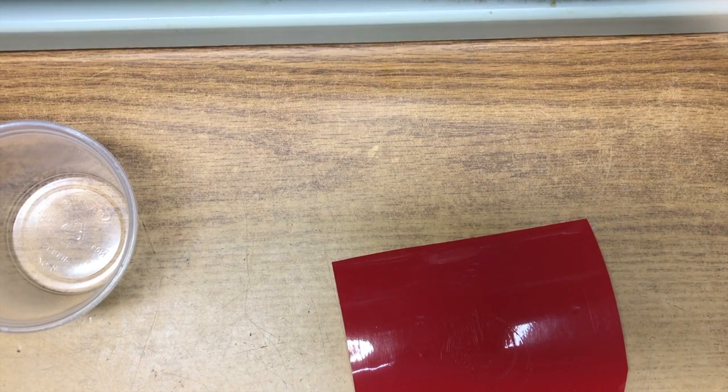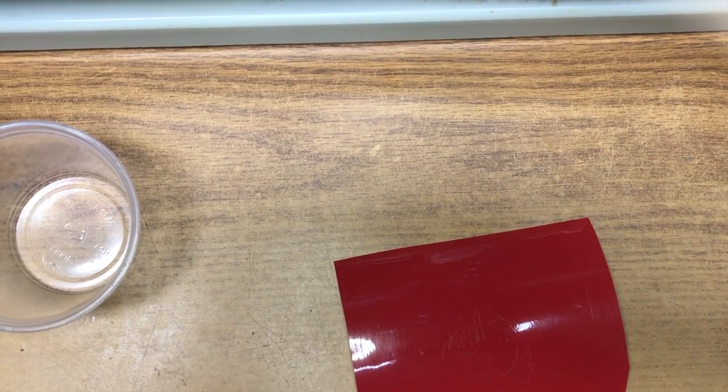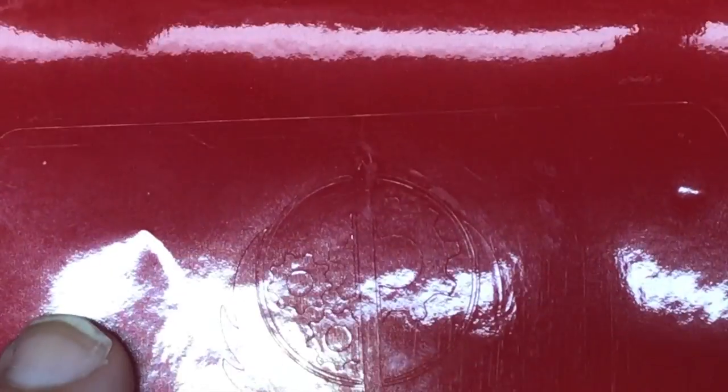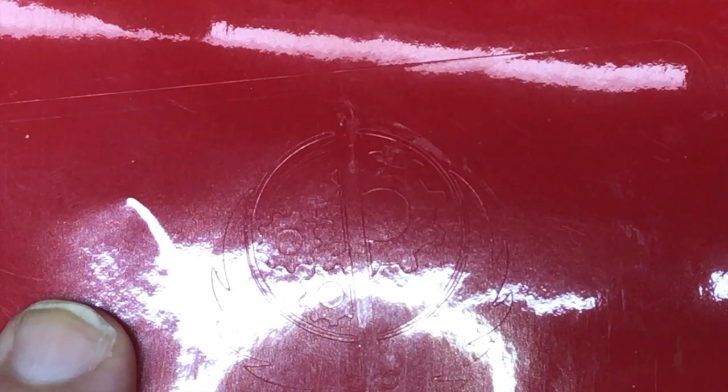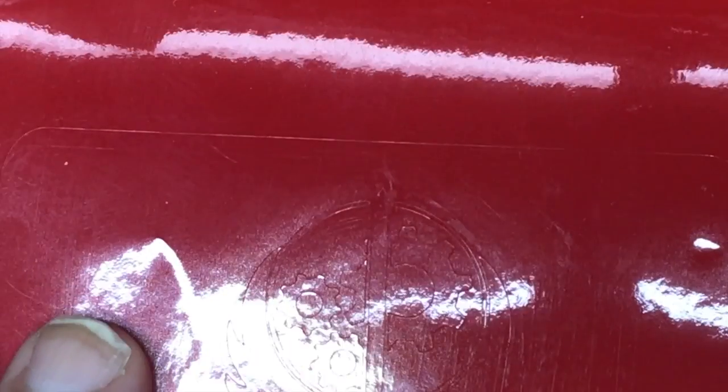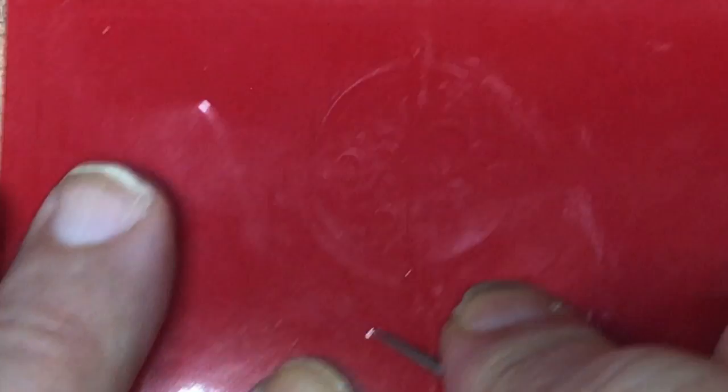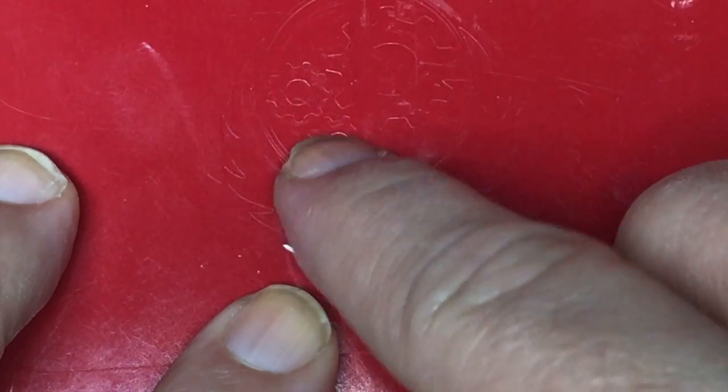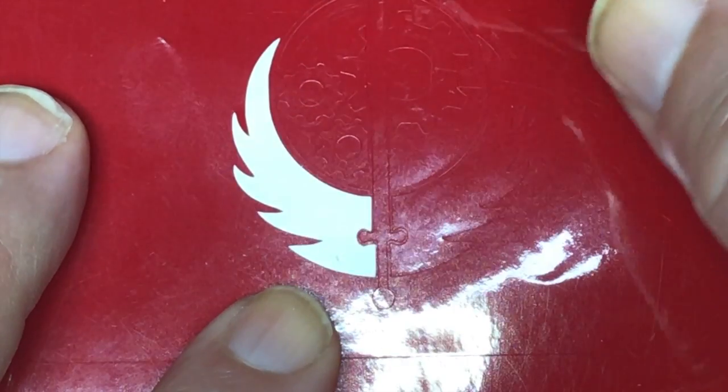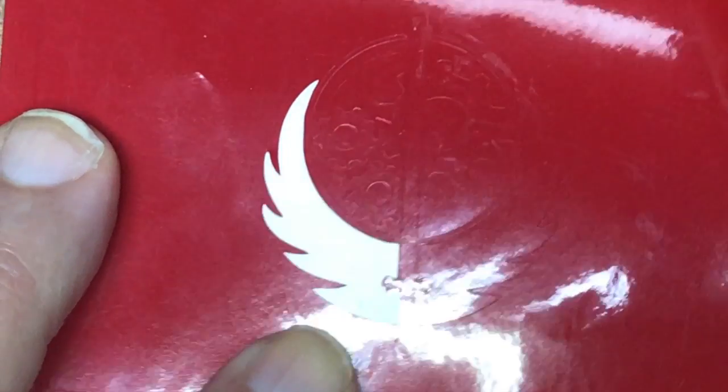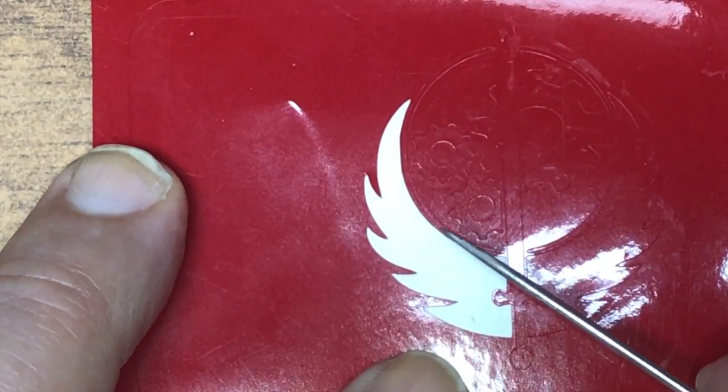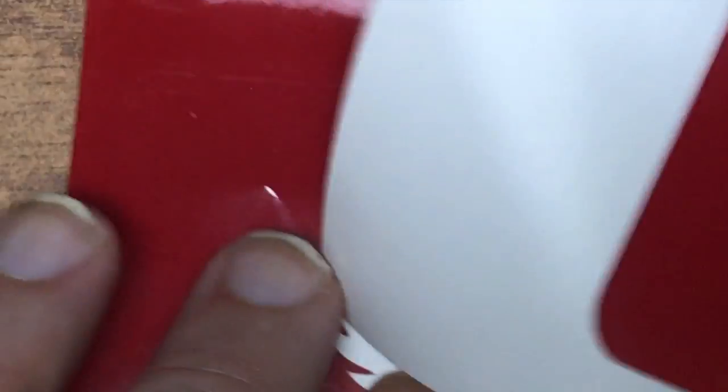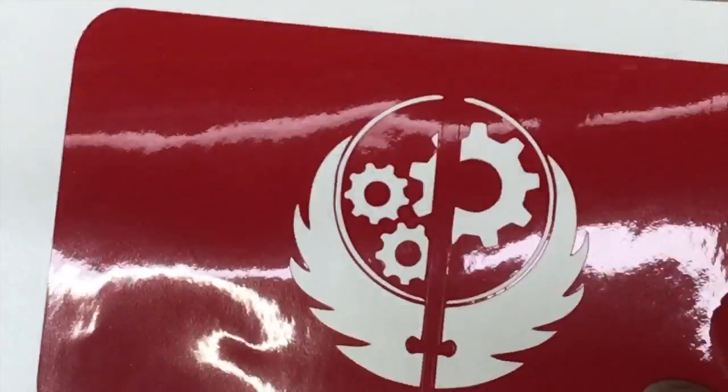And then what you do is you have to weed the stencil. I'm going to see if I can zoom in here and then show you a little bit of that. The stencil is made up of cut lines and parts that you want to remove. Now you want to remove whichever parts you want to be etched. So when you get done doing this, you end up with something like this.